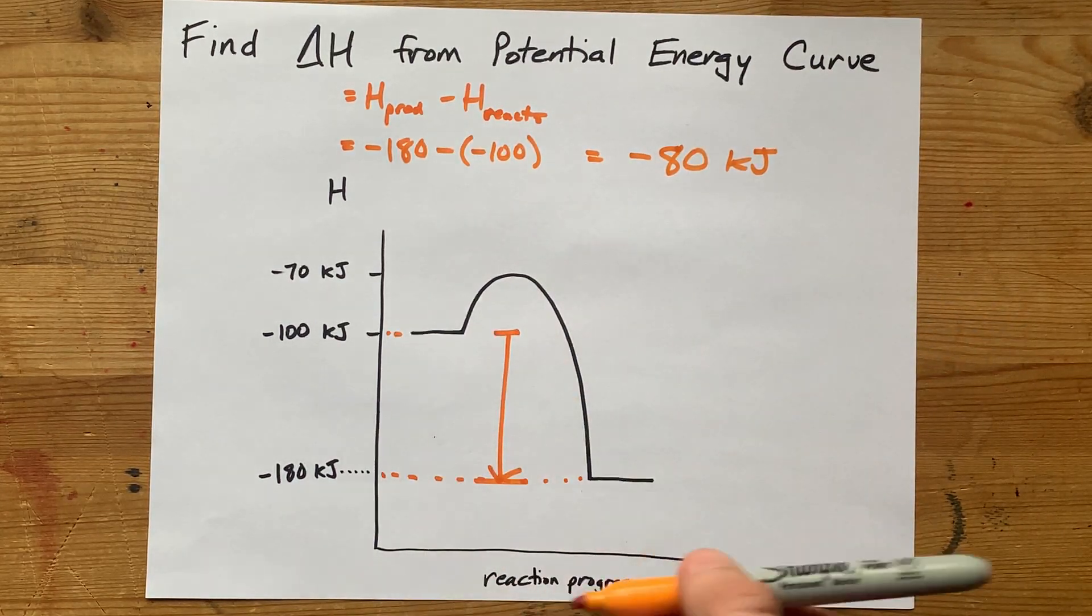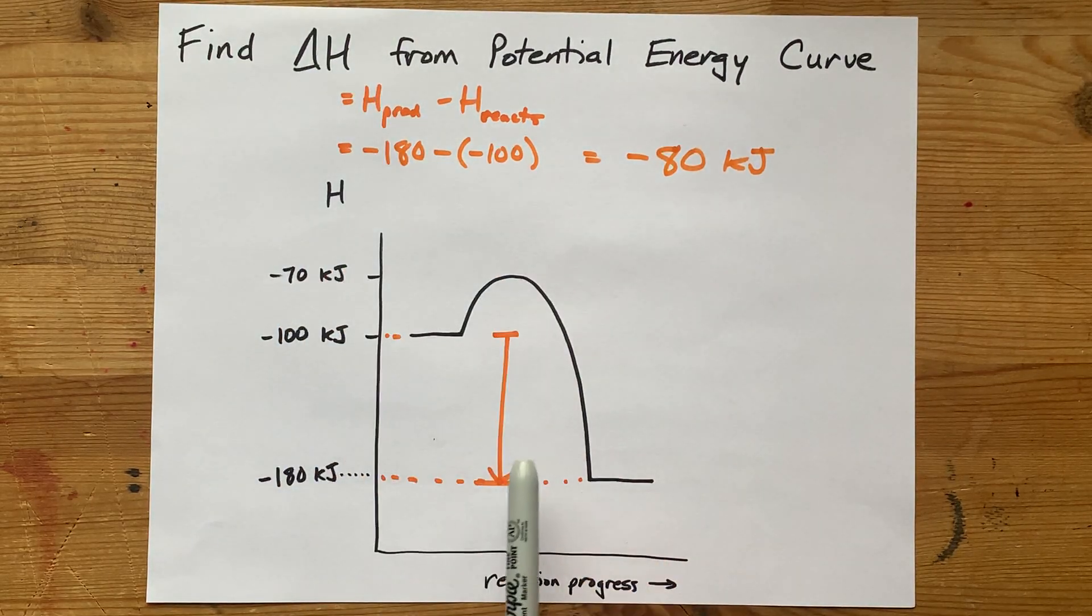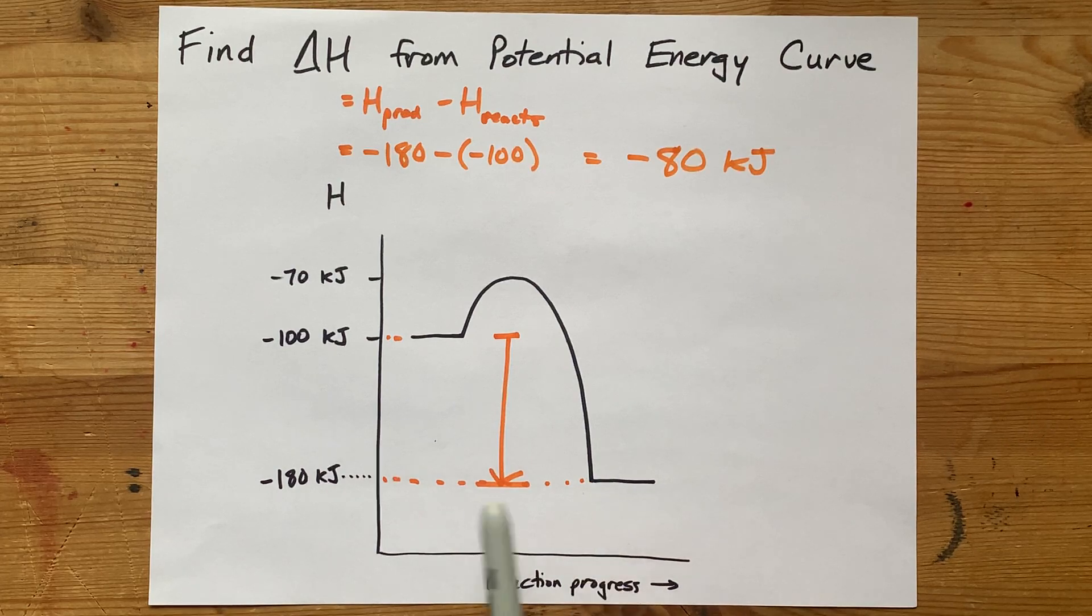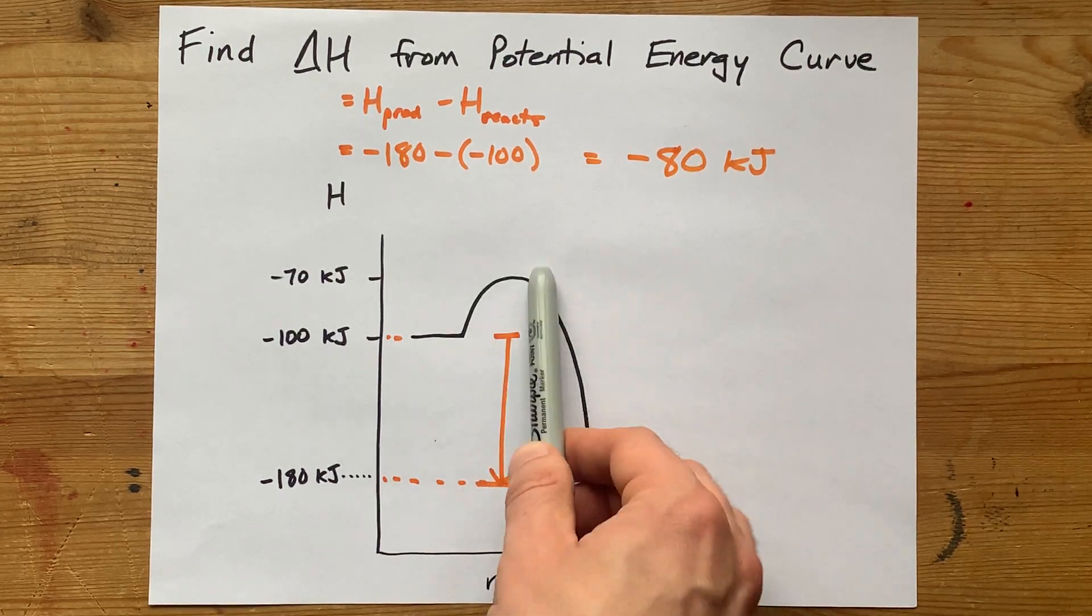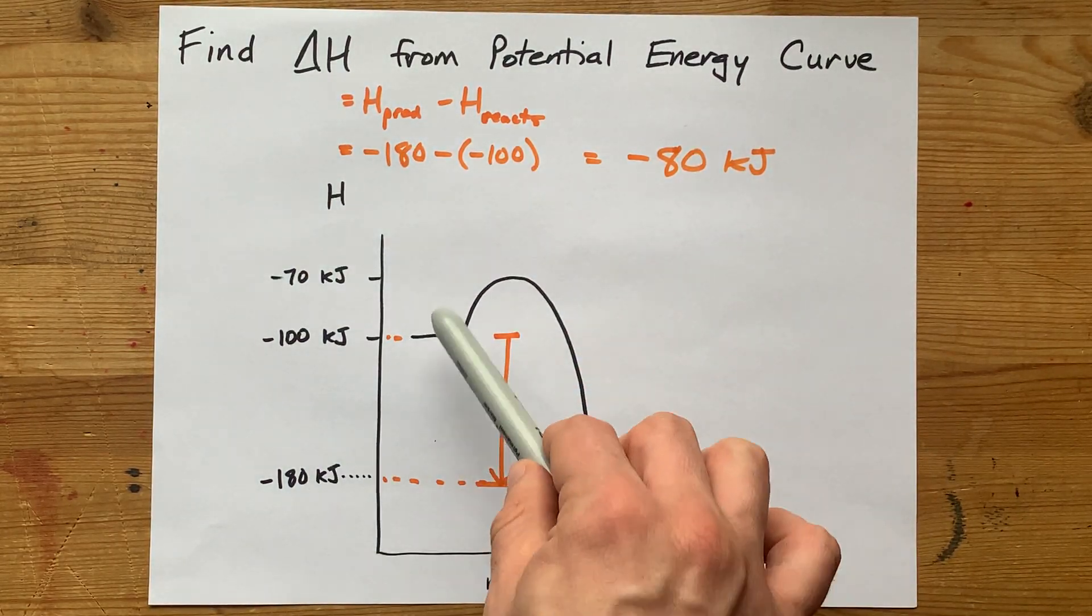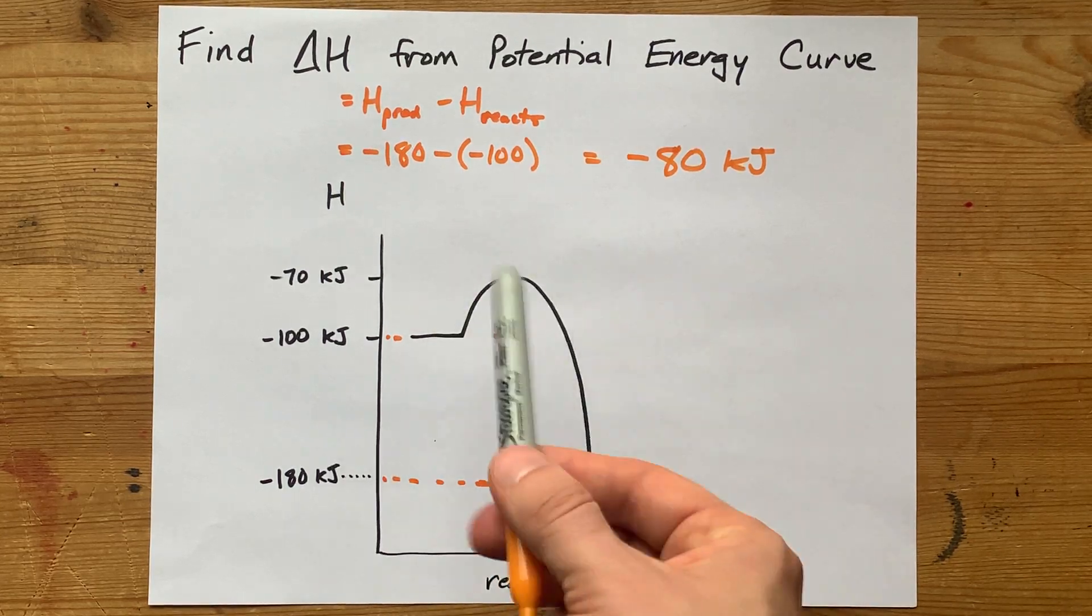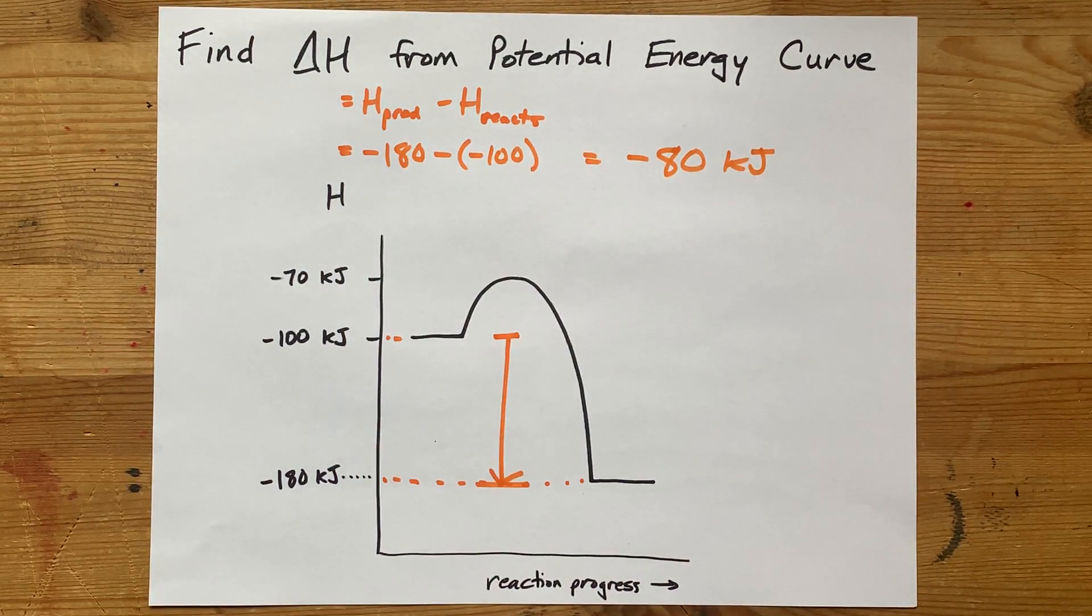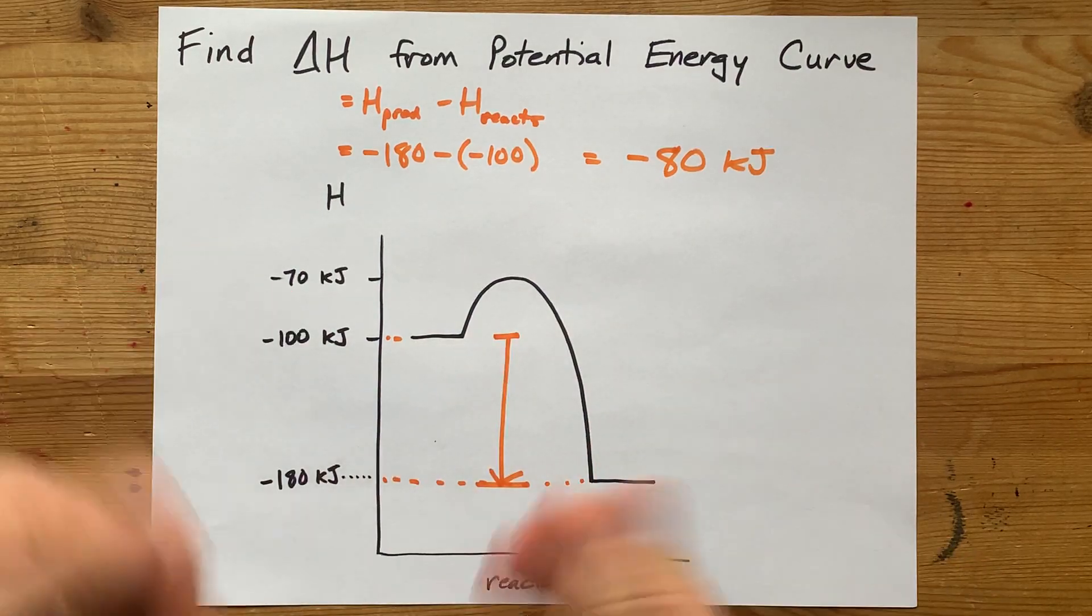Great. The real point here is that the enthalpy change corresponds to the difference between reactants and products. How high this hump goes means nothing to me. That hump size is more related to activation energy than enthalpy change. Thanks for being with me and best of luck.